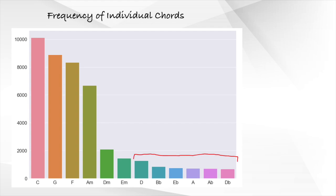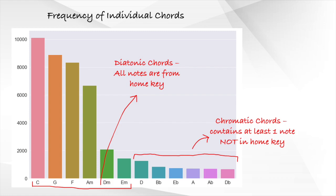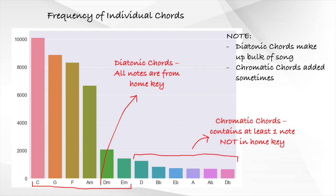Notice that the next 6 most frequently used chords are used much less than the top 4. These 6 chords are also known as chromatic chords, which simply refers to any chord that contains at least one note that is not in the home key — C major in this case. The first 6 chords, where all notes inside are from the home key, are in turn called diatonic chords. In a nutshell, a majority of chords used are diatonic chords, while chromatic chords are sometimes added in to add some colour and spice to the song. I'll cover more about diatonic and chromatic chords in a future video.